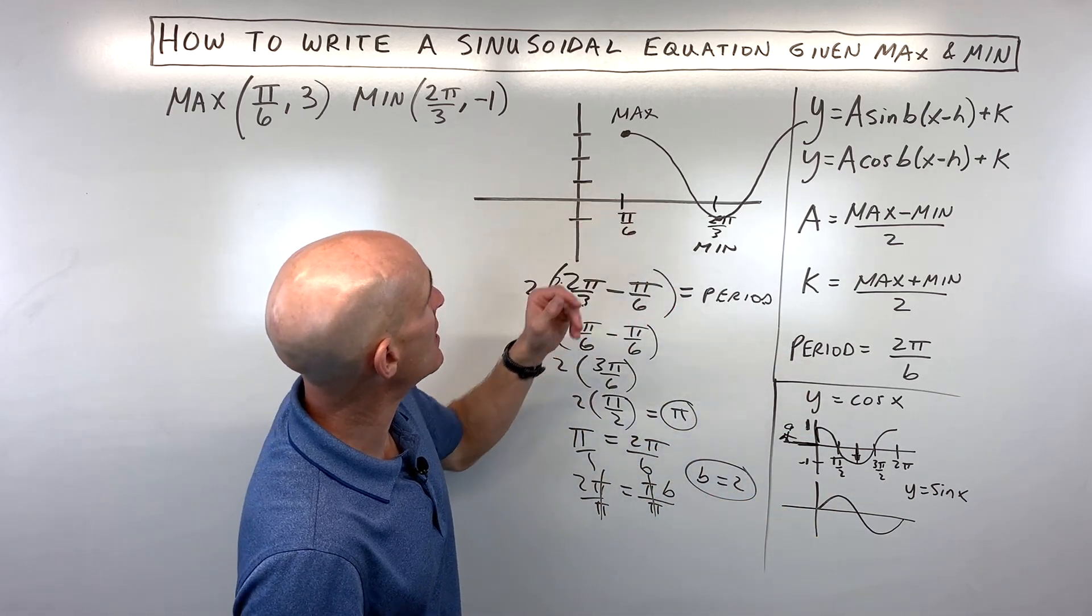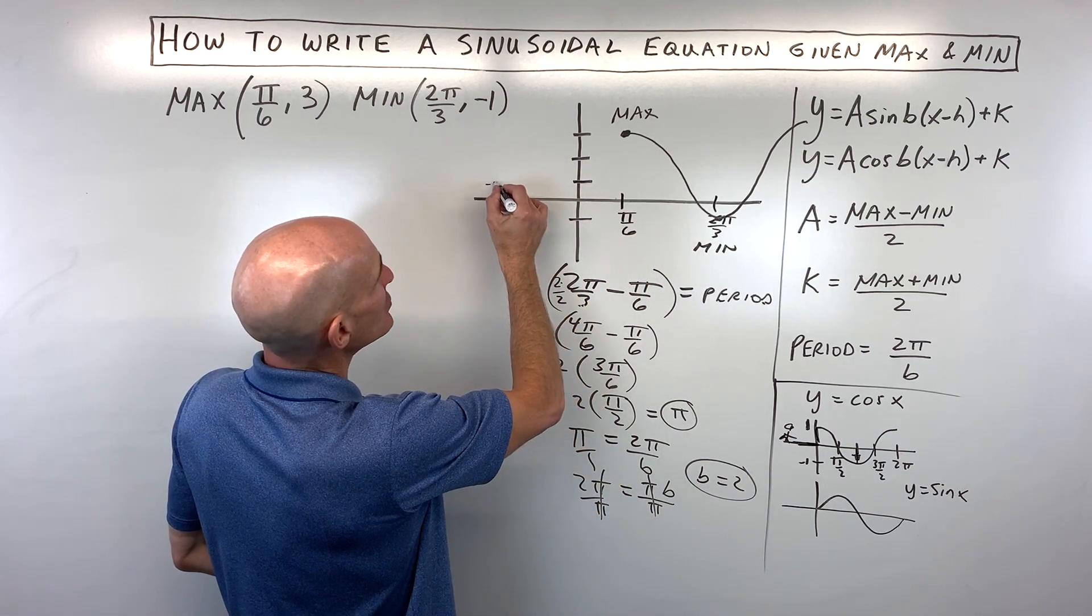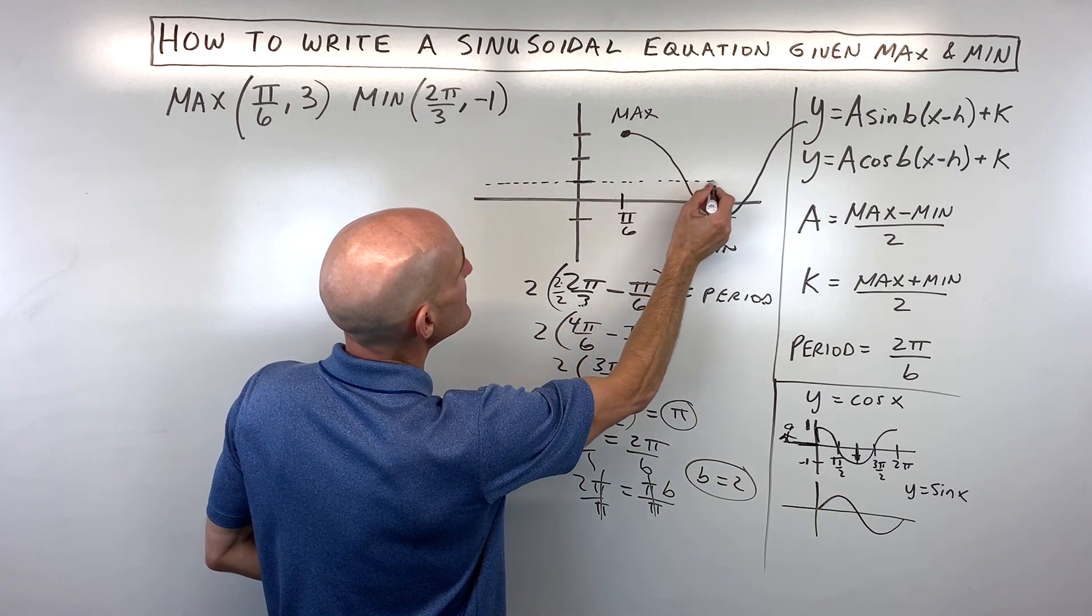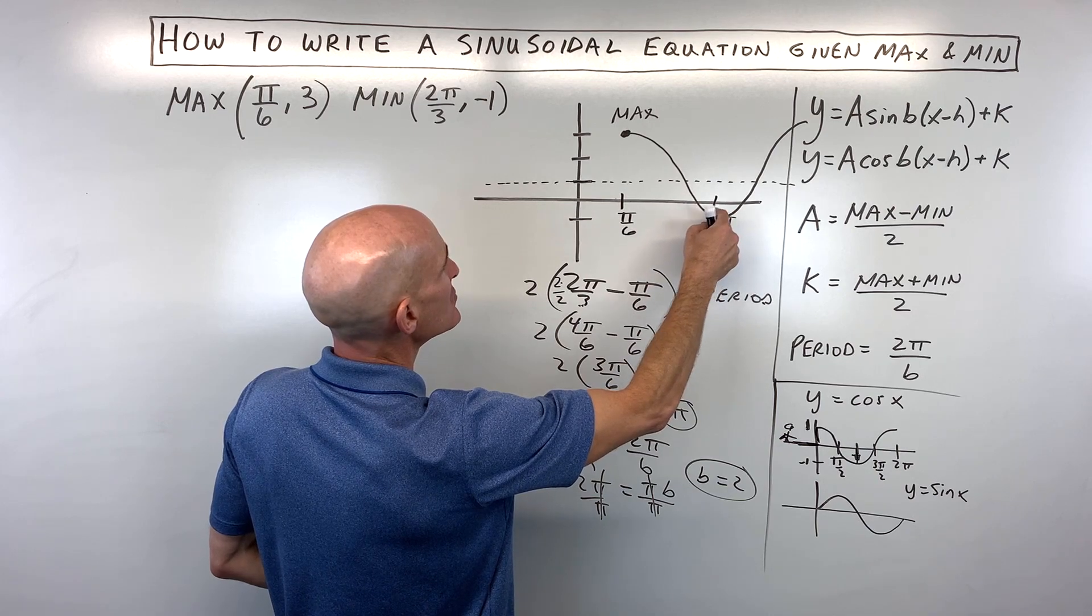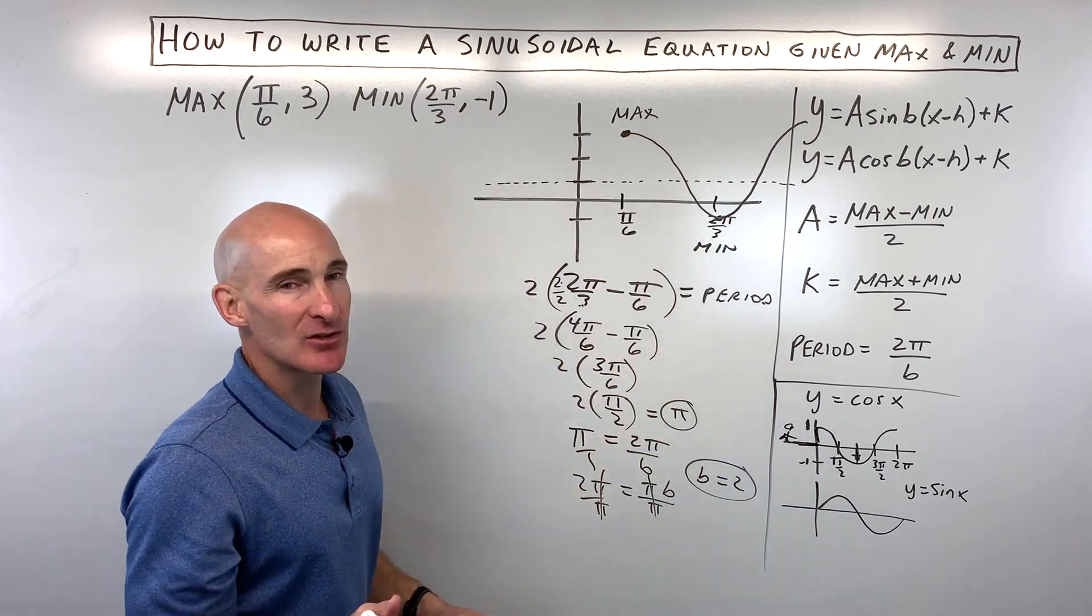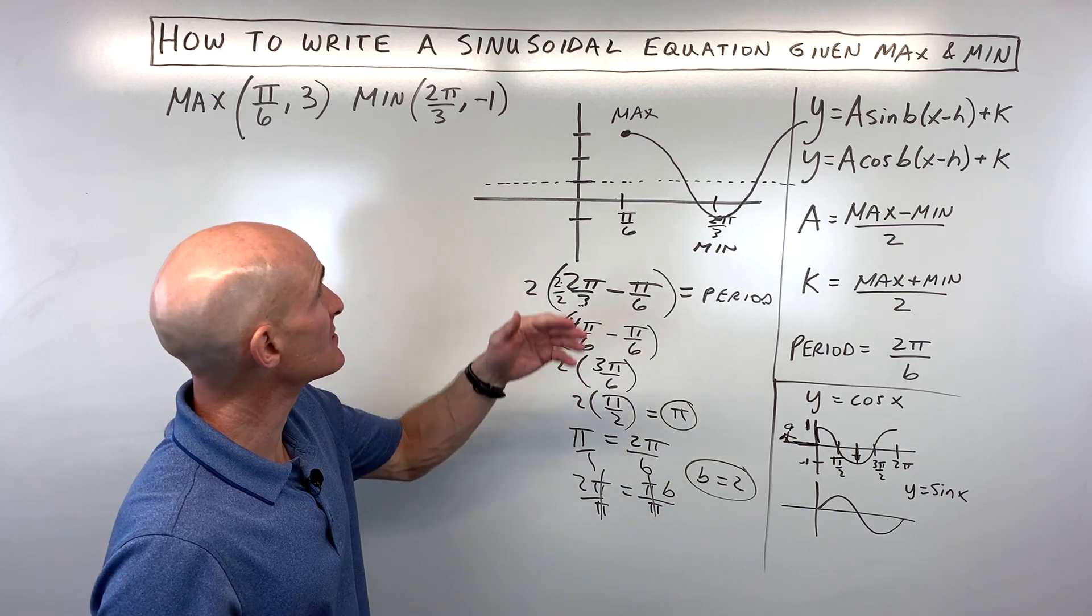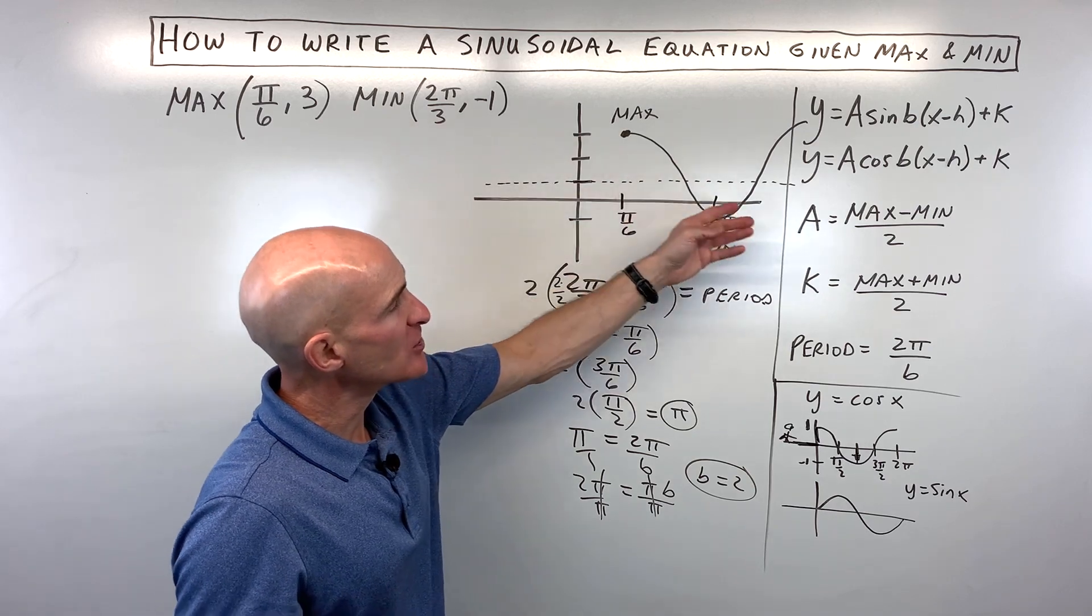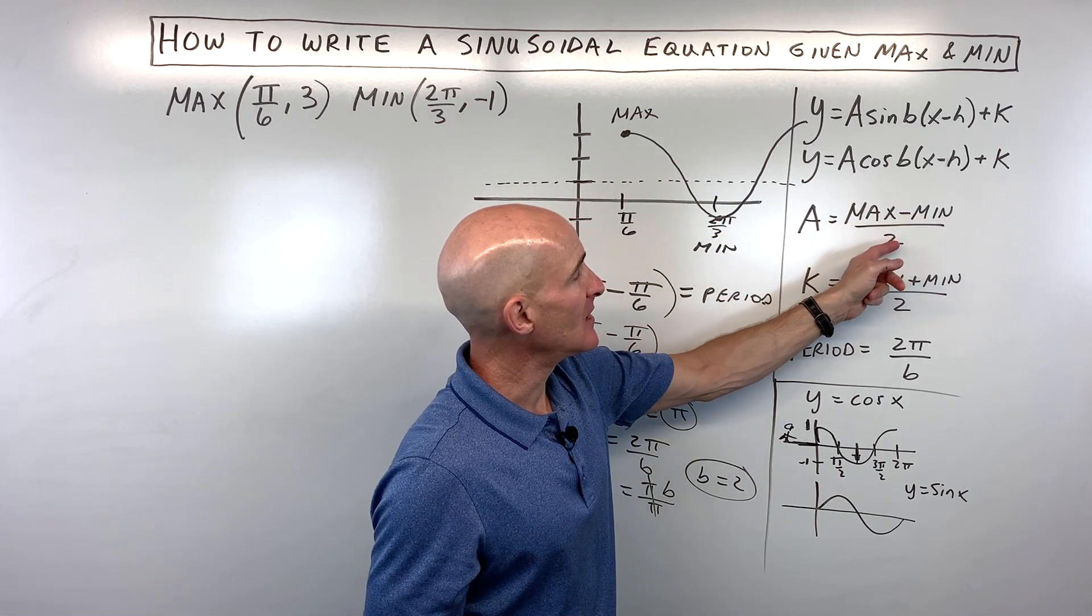So what I like to do sometimes is I like to try to sketch in like a midline. And I can see that this is the midline right here. I can see from here to the minimum is 2, from here to the maximum is 2. So I can see that that amplitude is 2. Now some students may have a little challenge doing that depending on the numbers that they give you. So you might want to use this formula right here.